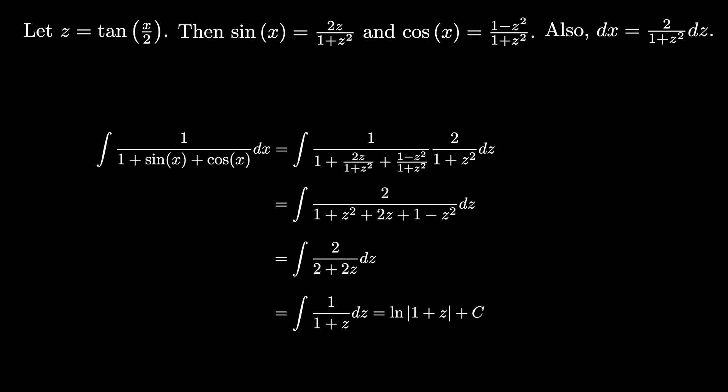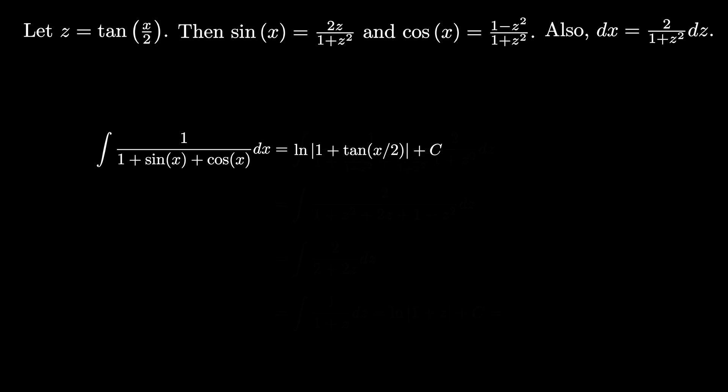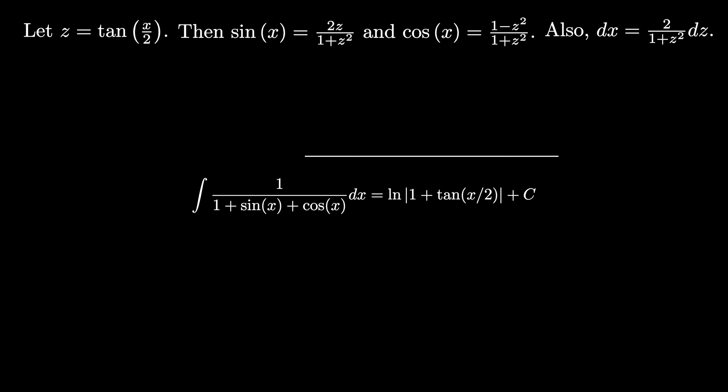But this is the natural log of the absolute value of 1 plus z plus a constant, and when we remember that z is the tangent of x over 2, we get that the integral that we wanted is the natural log of the absolute value of 1 plus the tangent of x over 2 plus a constant.